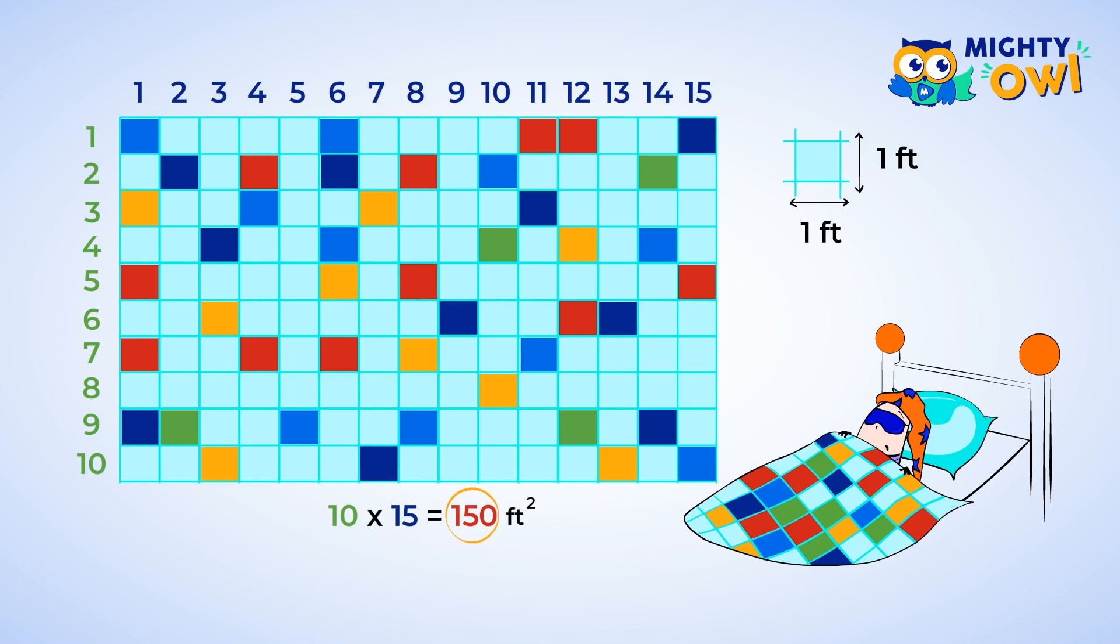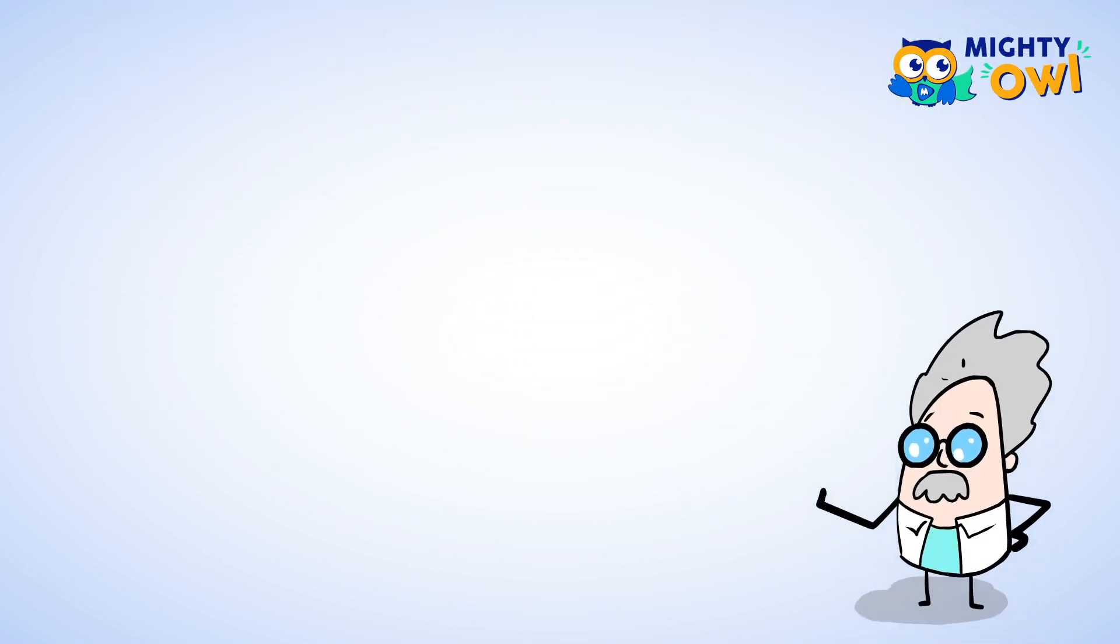Guess what? We just found the area of the quilt. When we have rectangles, we can use multiplication to find the area quicker. Let's look at another example.